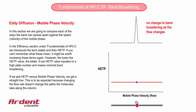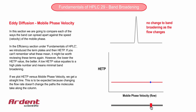If we plot HETP versus mobile phase velocity, we get a straight line. This is to be expected because changing the flow rate doesn't change the paths the molecules take along the column.